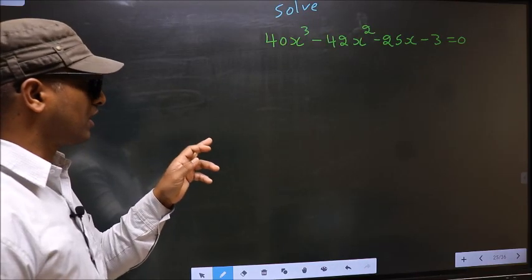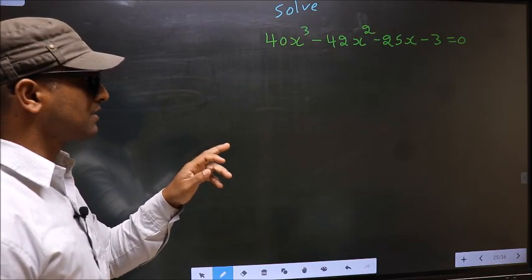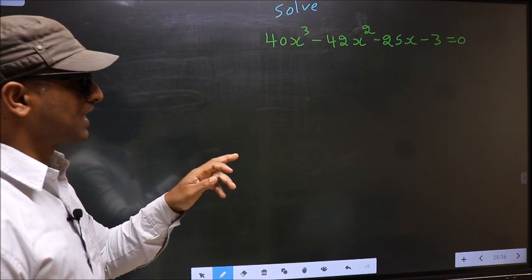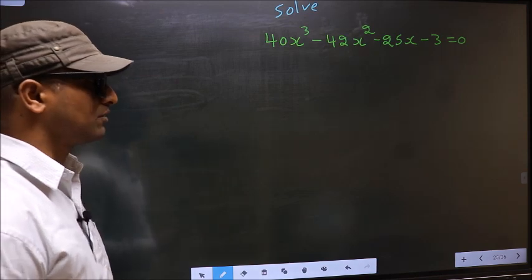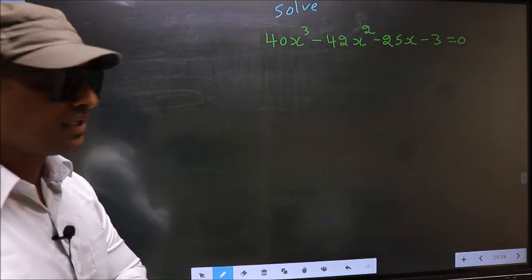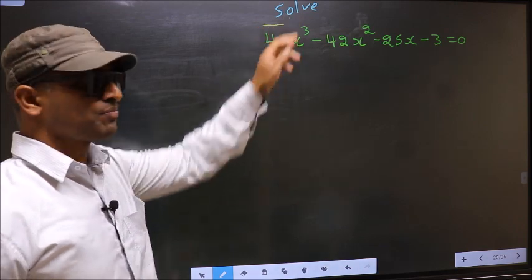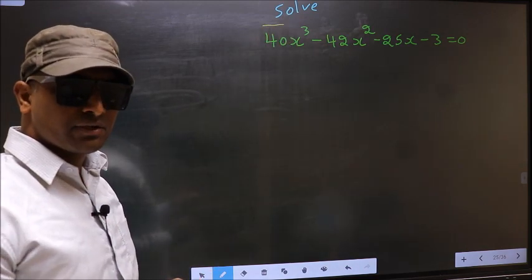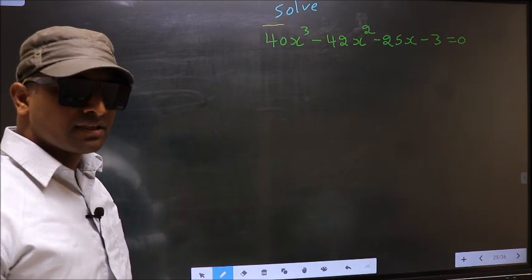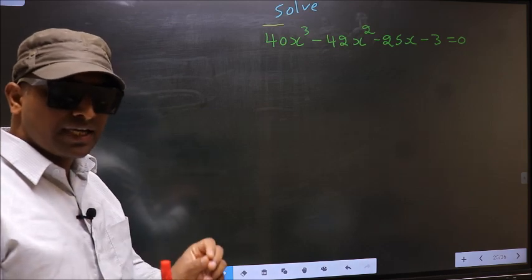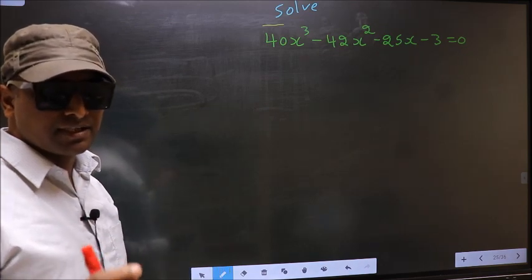Solve 40x³ minus 42x² minus 25x minus 3 equal to 0. Here they told us to solve, which means we should find the values of x. For that, here we have to change the x term.